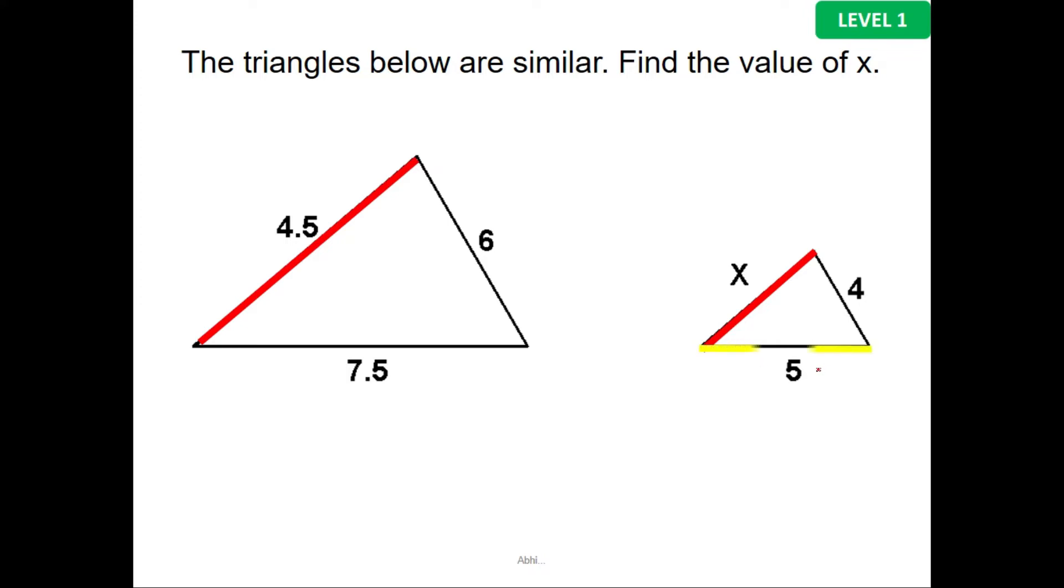The side that's 5 centimeters in the smaller triangle corresponds to 7.5 centimeters in the bigger one. Now how will you make the ratio? I'll be taking x over the corresponding side on the bigger triangle, which is 4.5. So x over 4.5 is equal to 5 over 7.5, which is the corresponding side in the bigger triangle.